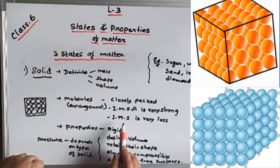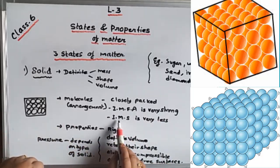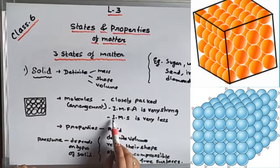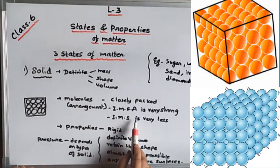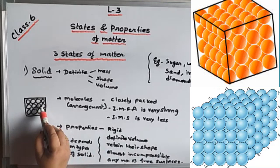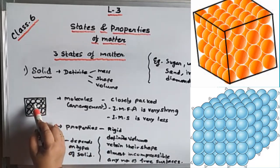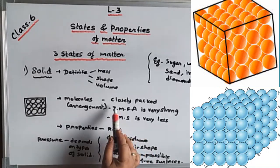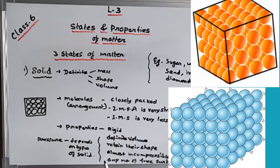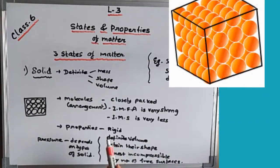That's why we cannot pull them apart. The intermolecular space — the gap between molecules — is very less. There is negligible gap between them. So the intermolecular space is very less. These are the three characteristics of the molecular arrangement of solid.